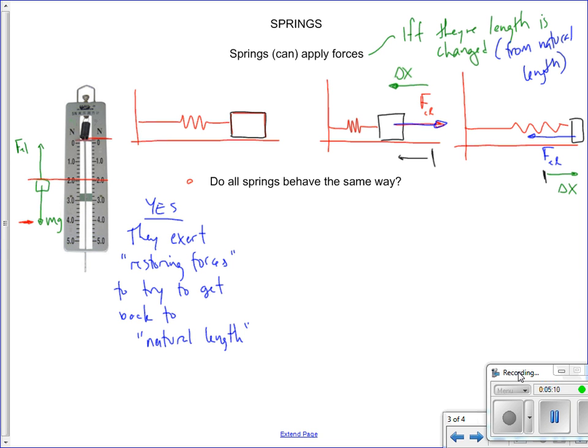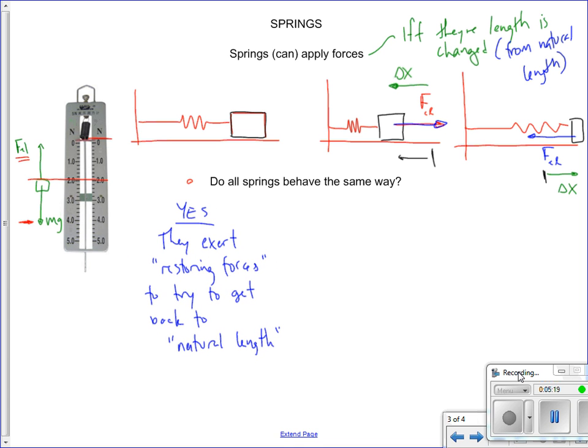Well, that means that if it's hanging there in equilibrium, the elastic force must be 2 newtons. If we hang something more massive, it shows us that this thing weighs 5 newtons.